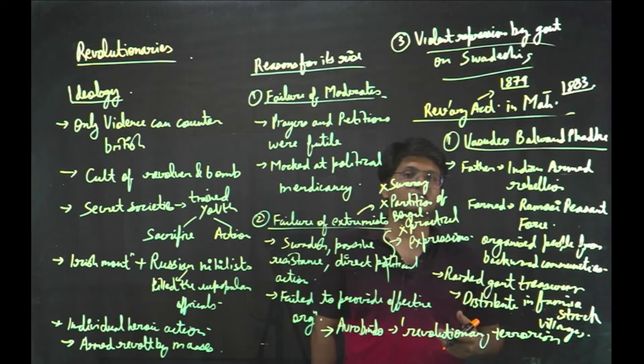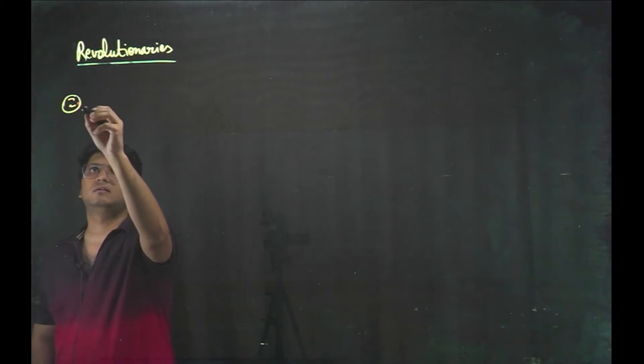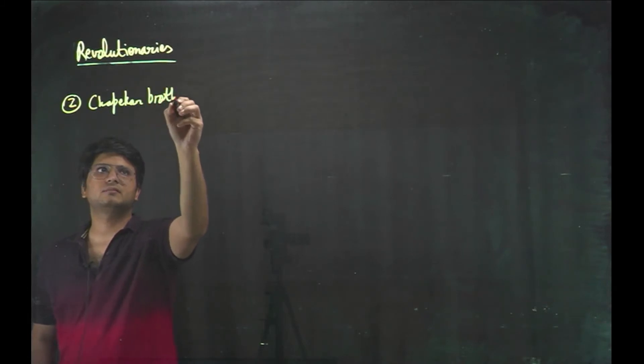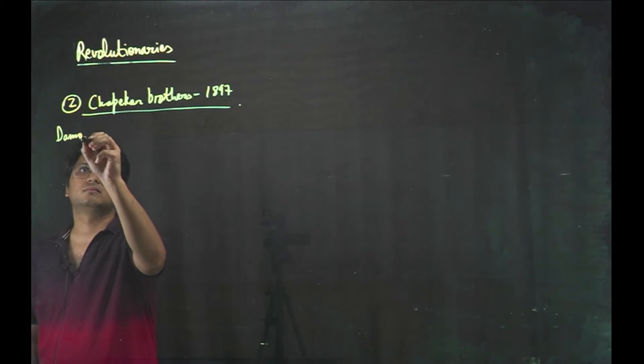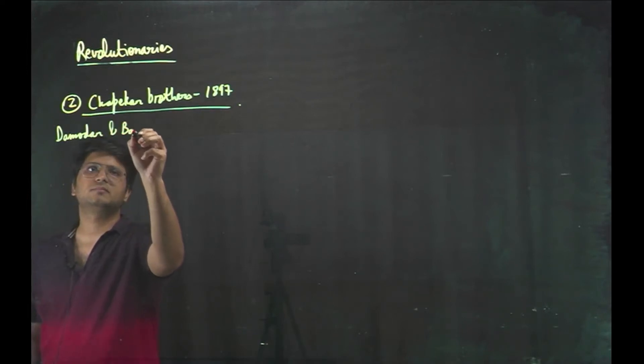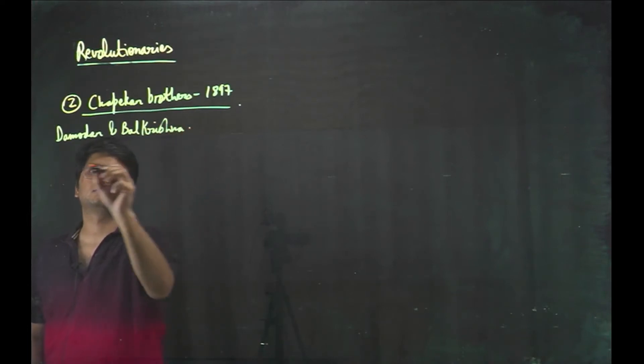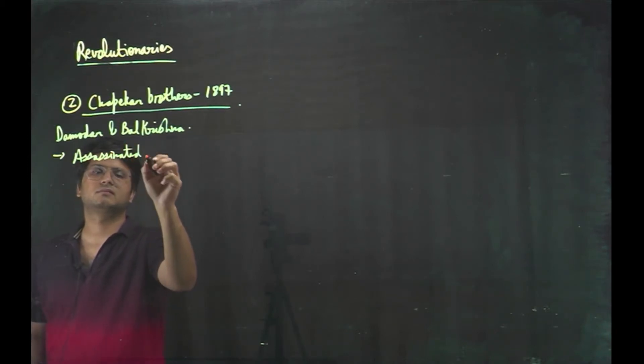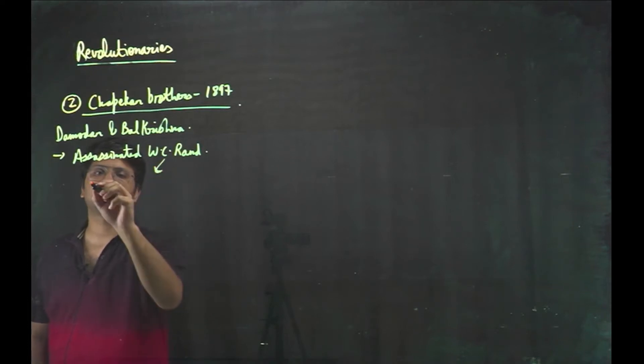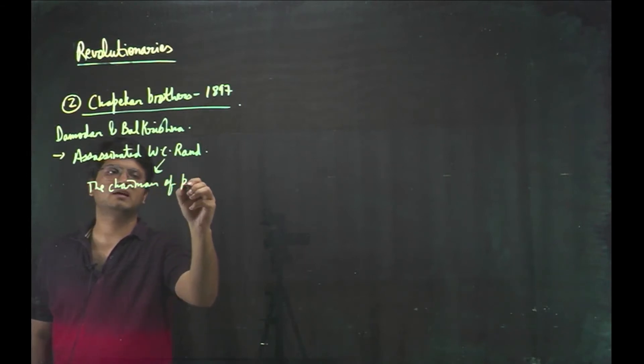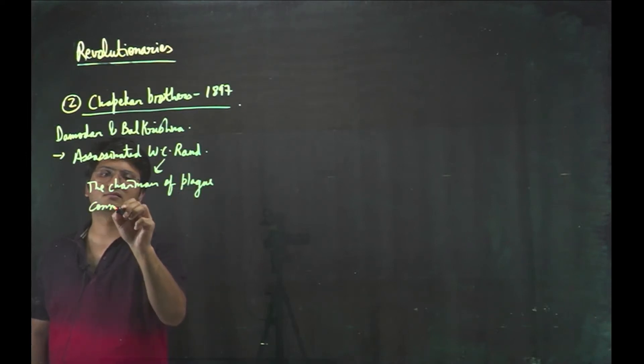They were the successors of Peshwas. Second, Chapekar brothers, Damodar and Balkrishna, they assassinated W.C. Rand, he was the chairman of Plague Committee at Pune.